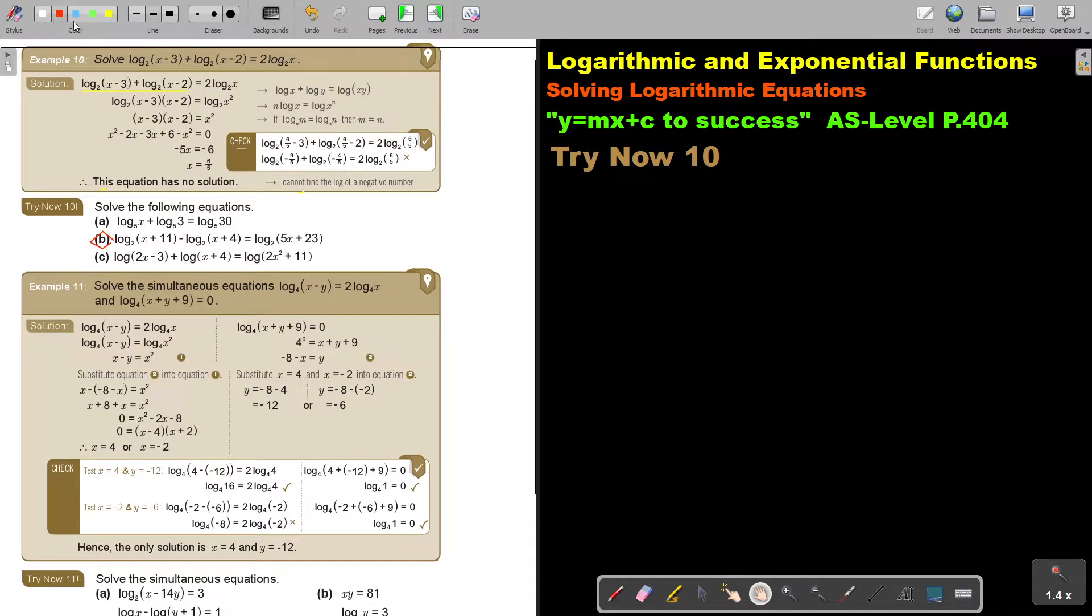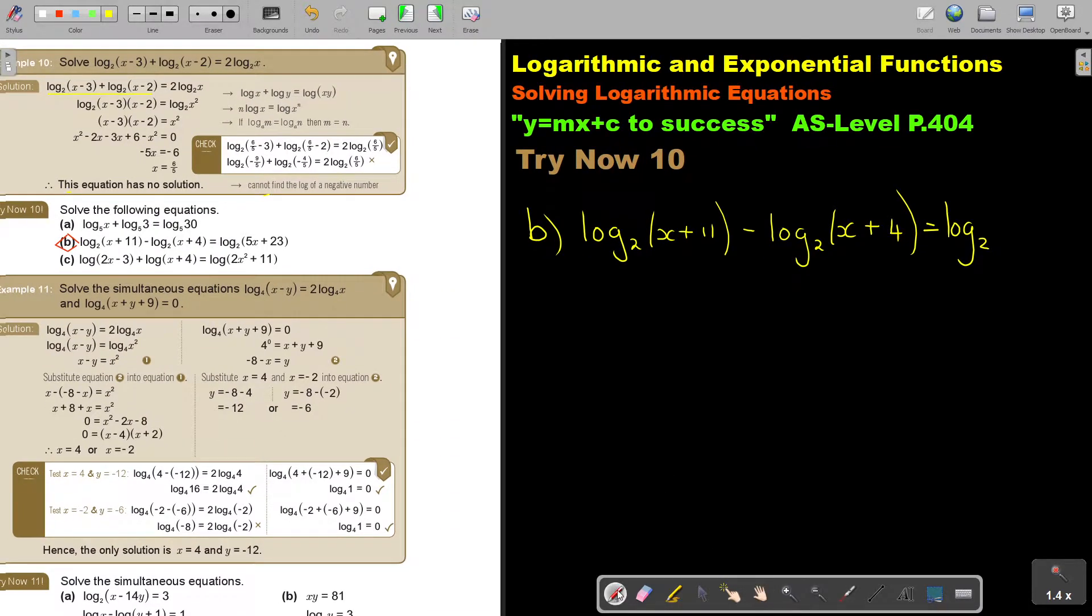Okay, here it is. Now I'm first going to write it. So it's log base 2 of (2x plus 11) minus log base 2 of (x plus 4) equals log base 2 of (5x plus 23). Now, I gave you this one because you can go and follow the quotient rule.